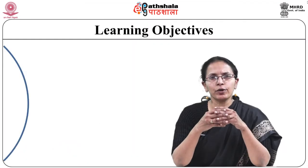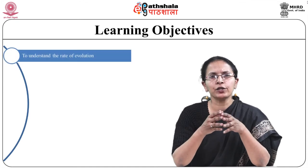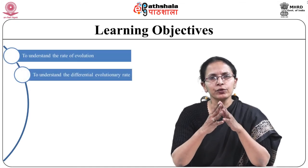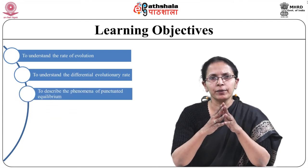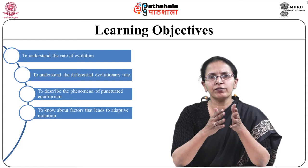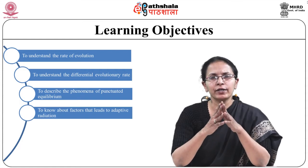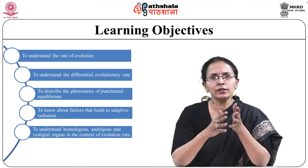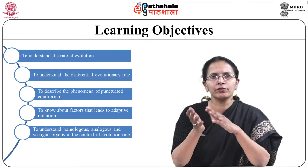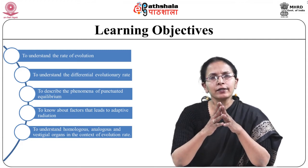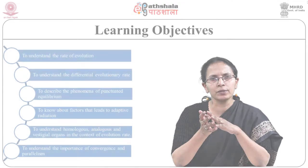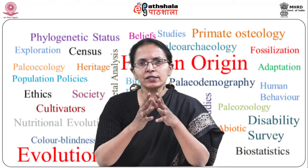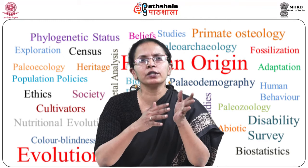The learning objectives of this module are to understand the rate of evolution and differential evolutionary rate, to describe the phenomena of punctuated equilibrium, to know about the factors that lead to adaptive radiations, and to understand homologous, analogous and vestigial organs in the context of evolution rate.